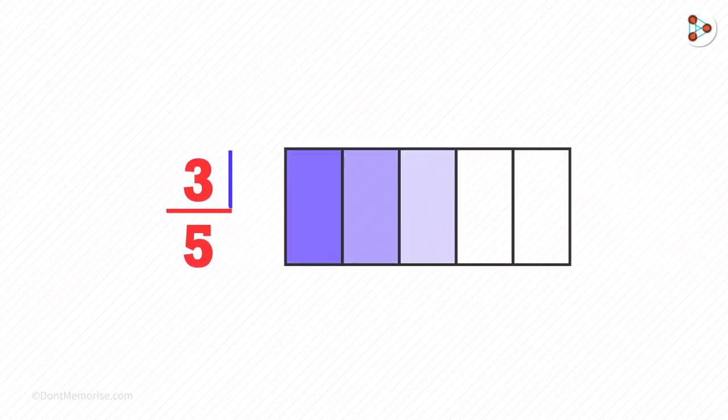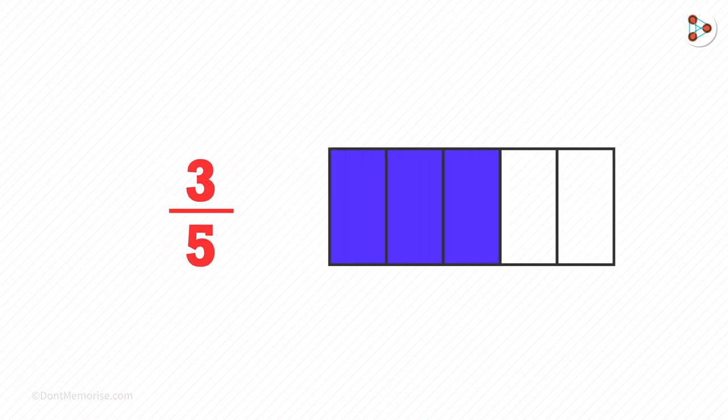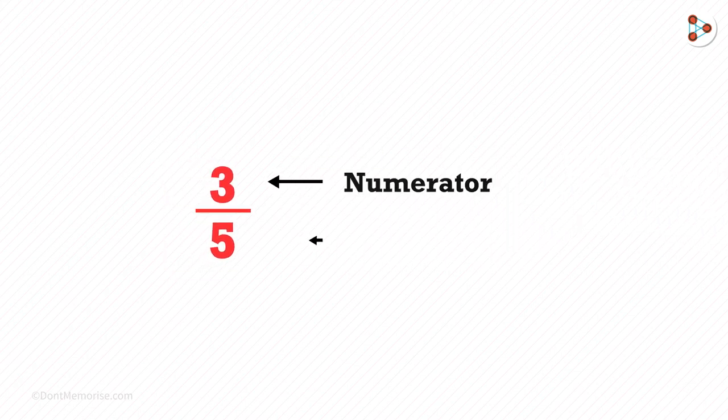Here's an example of a fraction, 3 over 5. This says that if we have 5 equal parts and we take 3 parts from it, then we will get 3 over 5. Here we call 3 as the numerator and 5 as the denominator.